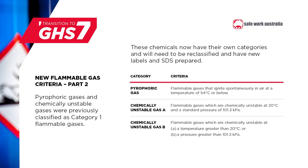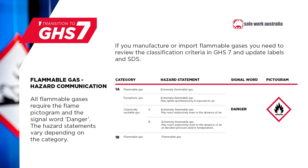A pyrophoric gas is a flammable gas that is liable to ignite spontaneously in air at a temperature of 54°C or below, while a chemically unstable gas is a flammable gas that can react explosively in the absence of air or oxygen. Pyrophoric gases and chemically unstable gases were previously classified as Category 1 flammable gases in Australia. The new classification requirements mean that these chemicals now have their own hazard categories and will need to be reclassified. By default, existing Category 1 flammable gases should be classified into the new Category 1a unless data is available that says otherwise.